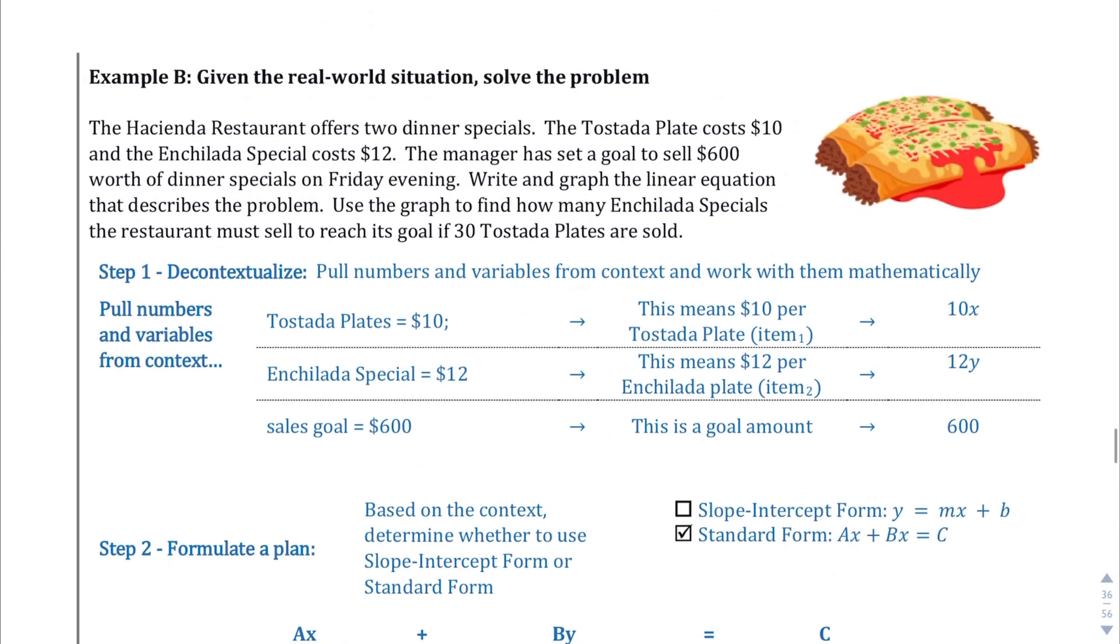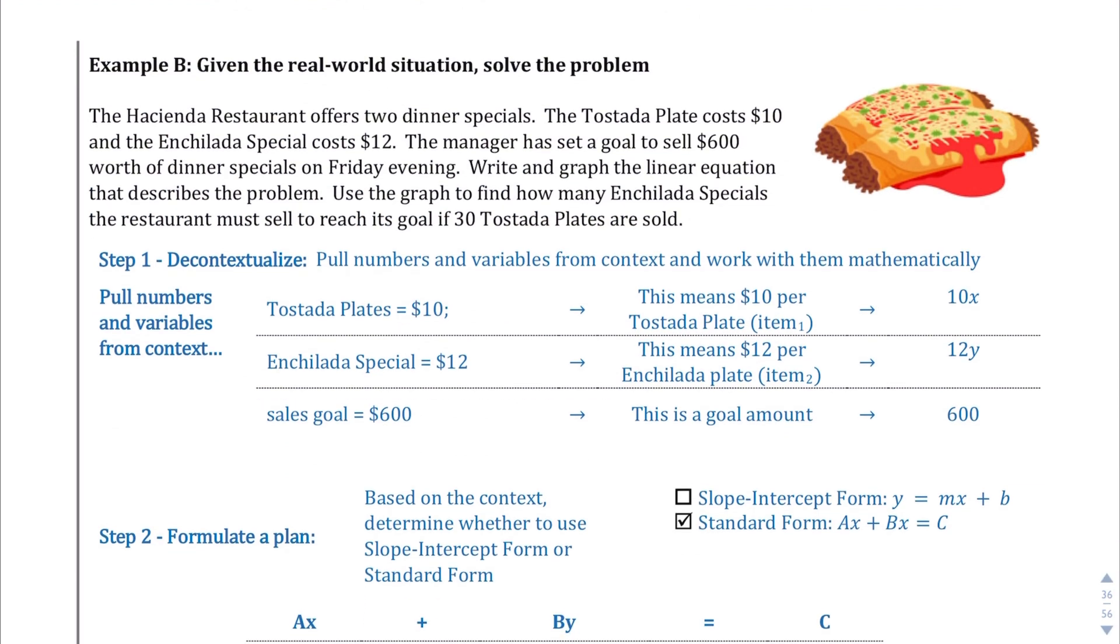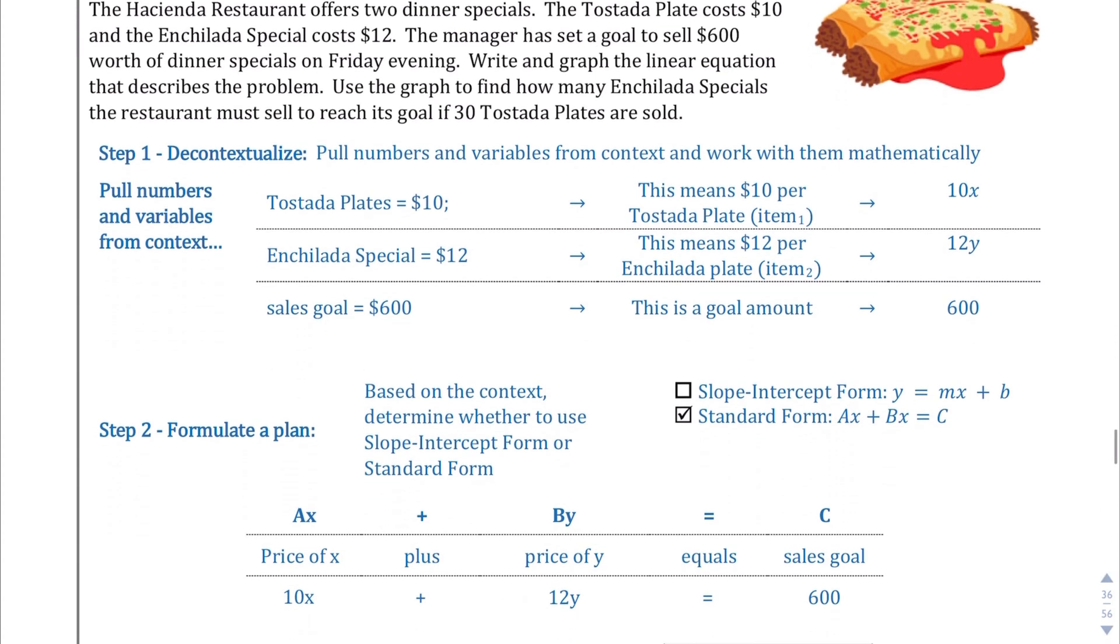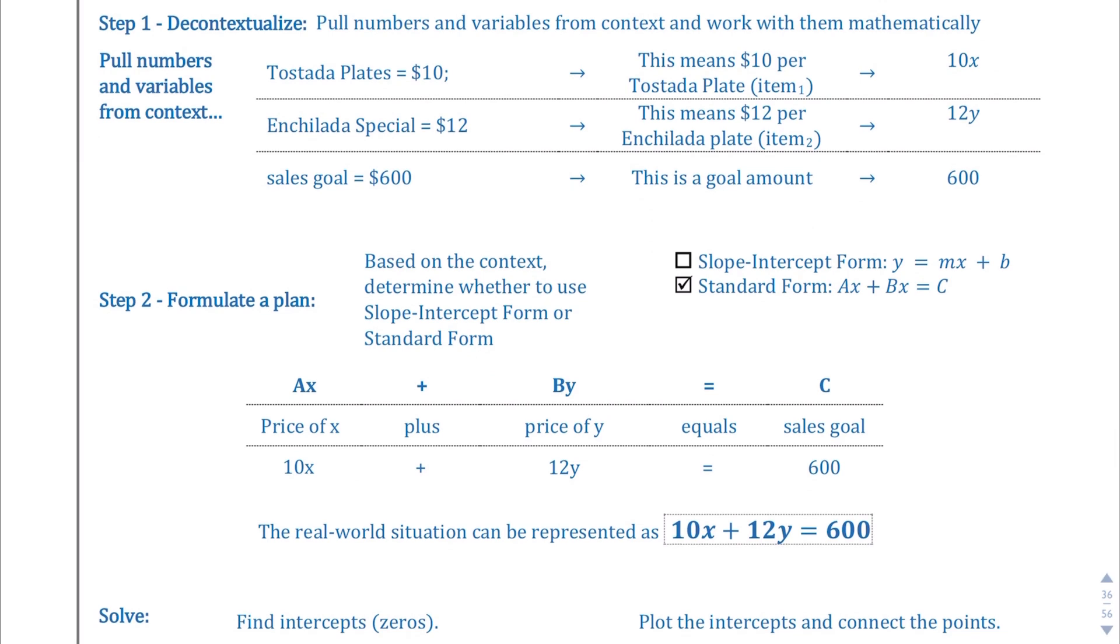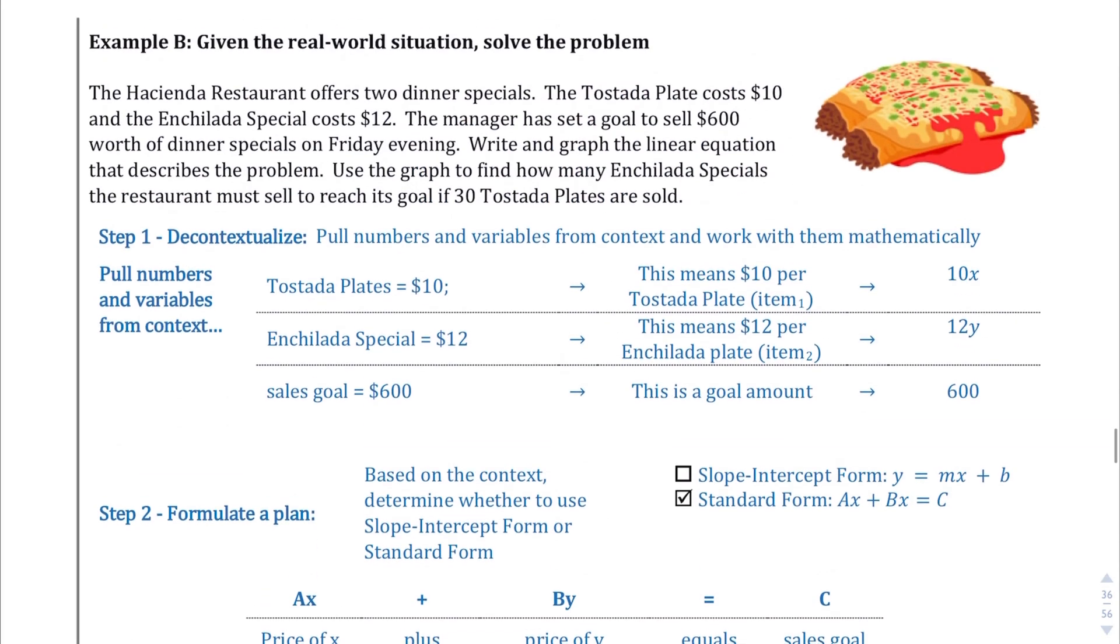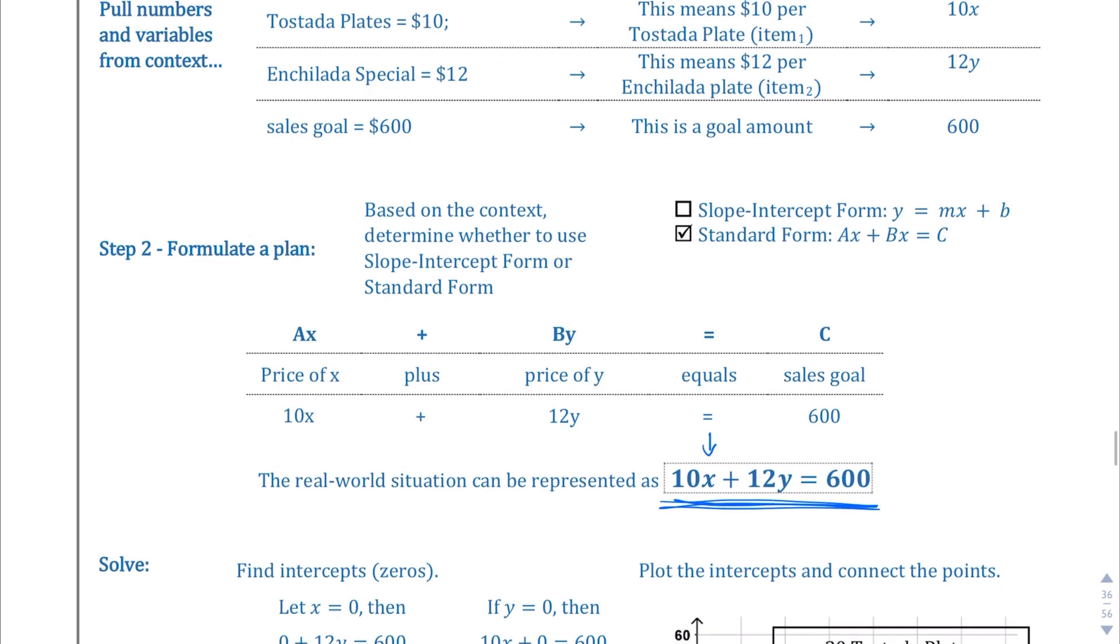Let's move in the context of the Hacienda restaurant offering two dinner specials. The tostada plate cost $10 and the enchilada special cost $12. And they want to sell $600 with the dinner specials. So that's a lot of work. Here's the equation that you come out with. I'll let you read the explanation there yourself. But $10 is the price of the tostada plate. So the X would change depending on the number of tostada plates you sell. And it's $10 for each one. And then you have the enchilada plate for $12 each. And all that should total $600. So that's the logic behind what's going on there.